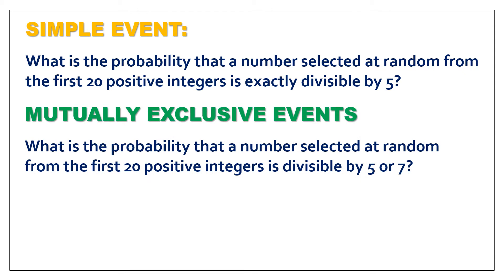Next, mutually exclusive events. What is the probability that a number selected at random from the first 20 positive integers is divisible by 5 or 7? This involves the union of two events. It is mutually exclusive because from numbers 1 to 20, there is no number which is both divisible by 5 and 7 at the same time. No common outcomes.